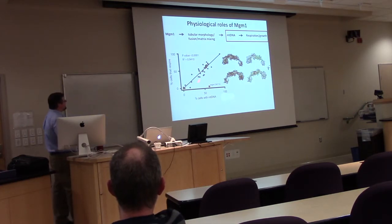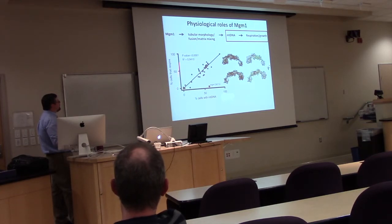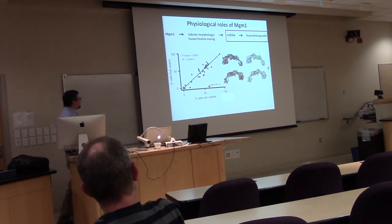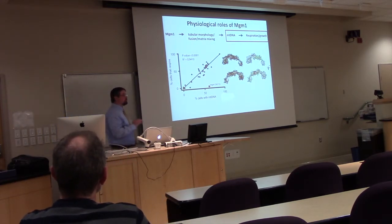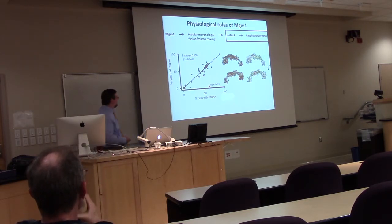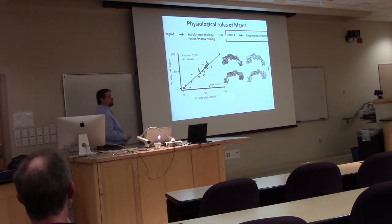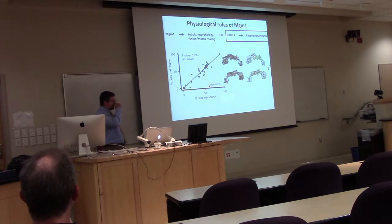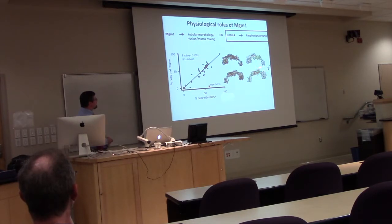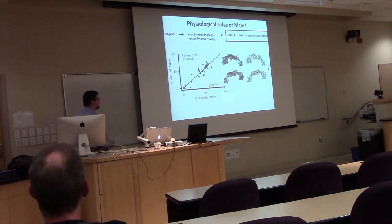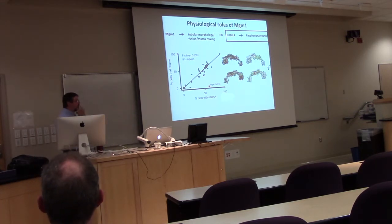There's an even tighter correlation between how many cells maintain genomes compared to how many cells can respire, which makes sense — if you have mitochondrial genomes you should be able to respire. However, we found one particular mutation that maintains mitochondrial DNA but is completely devoid of any ability to grow on non-fermentable carbon sources or respire by other assays. This mutation clusters near the novel interface patch, which is interesting — maybe it's a regulatory residue.